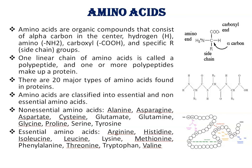Essential amino acids have to be obtained from dietary sources because we either lack the enzyme to synthesize these amino acids or make them in amounts that are not sufficient. Essential amino acids include arginine, histidine, isoleucine, leucine, lysine, methionine, phenylalanine, threonine, tryptophan, and valine.